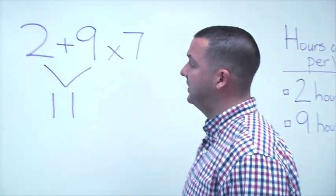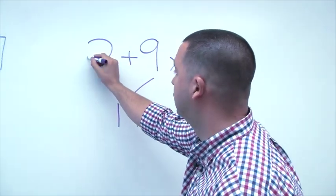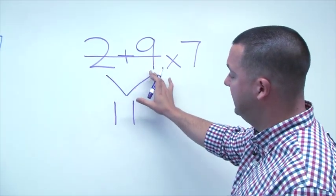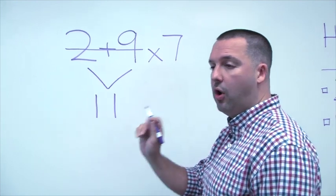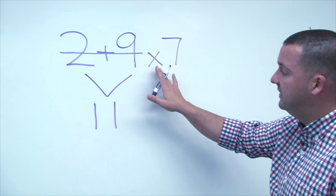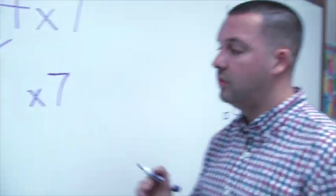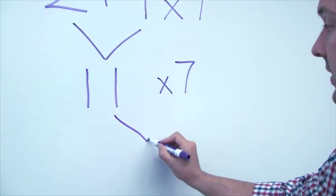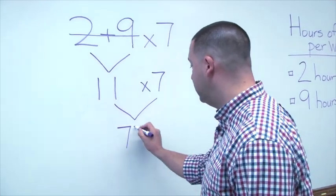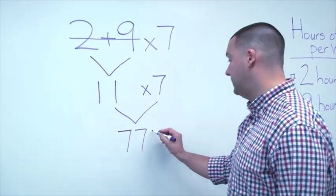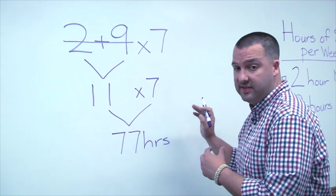One strategy I always like to work on with our fifth graders is to very lightly cross off whatever we just accomplished. So in this problem, we just did two plus nine and got 11. I like to use little arrows here. That helps us keep track of what we've already used in the problem. Obviously, we didn't use times seven yet, so I'm going to drop down times seven. Now we have 11 times seven, and 11 times seven is 77. Since we were talking about hours, our label is hours of sleep. So in this way, we got an answer of 77 hours.